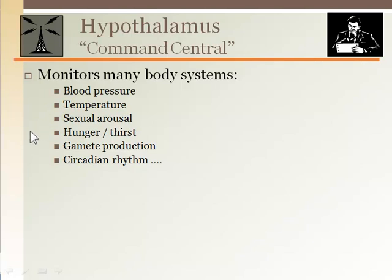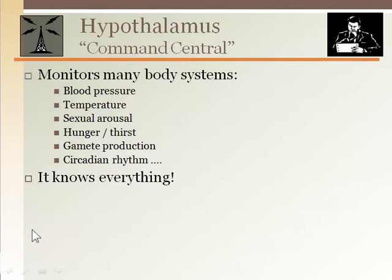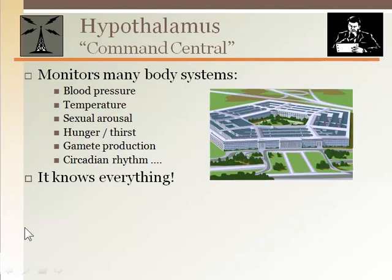In order to maintain homeostasis over so many different types of physiological processes, the hypothalamus receives many different types of information — blood pressure, hormone levels, electrolyte balance, etc. The analogy here is the pentagon, where so much information from all over the world goes for processing.